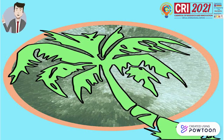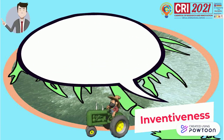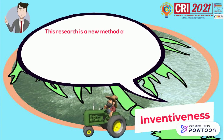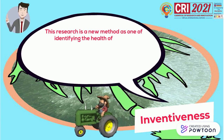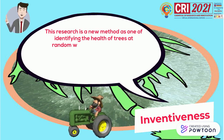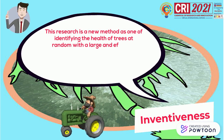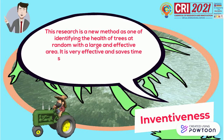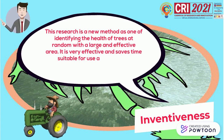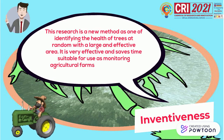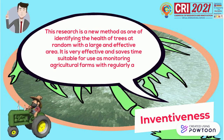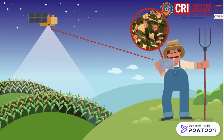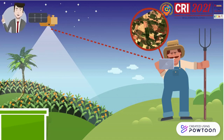The effectiveness or novelty in this research is that it is a new method for identifying the health of trees at random across a large and effective area. It is very effective and saves time, suitable for use in monitoring agriculture farms regularly across areas of more than 1 acre.